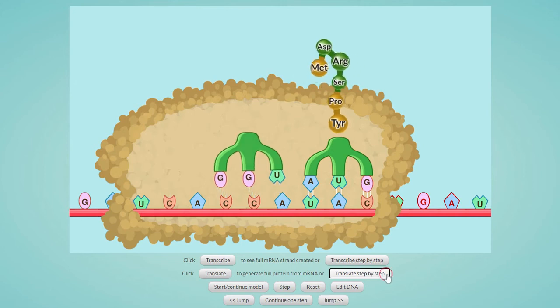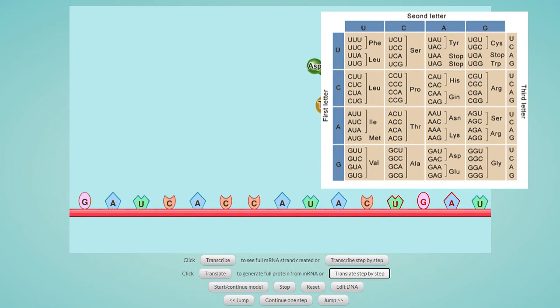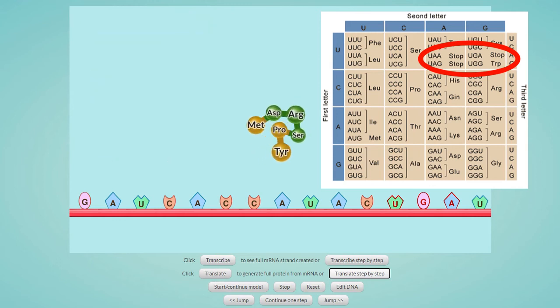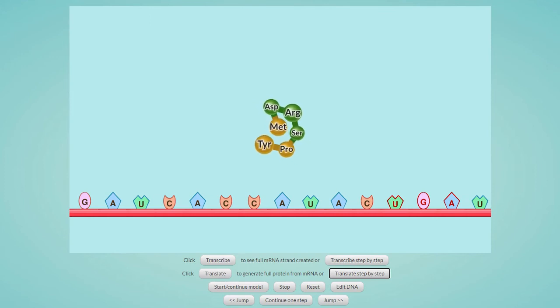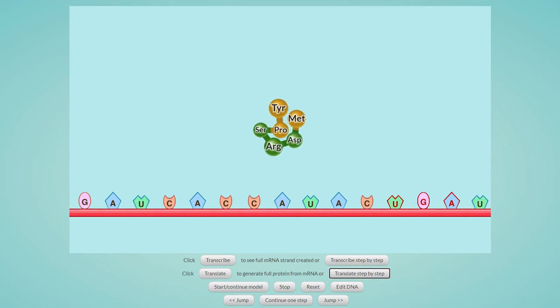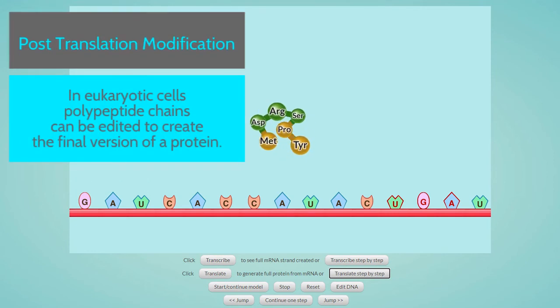The next three bases are UGA, which is one of the stop codons that will end the process of elongation when amino acids are being linked together. Any of the three stop codons will end the process of protein synthesis. Actual genes will create polypeptide chains of varying lengths. Some genes will create polypeptides containing tens, hundreds, or even up to thousands of amino acids. In eukaryotes, polypeptide chains go through a process of editing called post-translational modification to create the final version of a protein that will function in the organism.